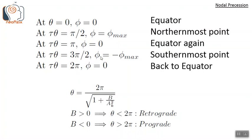At the end of one φ cycle, the value of θ is given by: θ = 2π / √(1 + b/A_k²). So if b > 0, the θ value will be less than 2π at the end of one φ cycle — θ has not yet completed the cycle, which means the orbit has precessed in the reverse direction of the basic revolution. This is retrograde nodal precession. If b < 0, then θ will be greater than 2π at the end of one φ cycle — θ has completed more than one cycle — which means the orbit has precessed in the same direction as the basic revolution. This is prograde nodal precession.